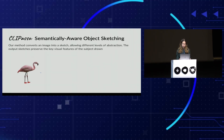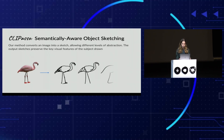In this work, we propose a method to convert an image into a sketch, allowing for different levels of abstraction. The output sketches preserve the key visual features of the subject drawn. For example, you can see how the main characteristics of the flamingo are preserved, such as the general pose, structure, long legs, and the special shape of the neck.